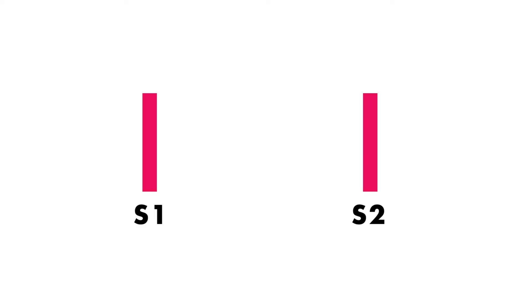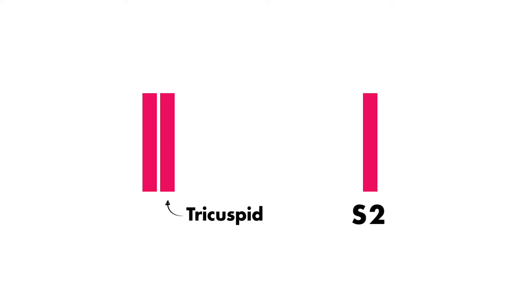Variations to the S1 heart sound can occur due to changes in its intensity, or how loud it sounds. The sound of S1 may also vary depending on how the atrioventricular valves close in relation to one another. For example, if the tricuspid valve closes after the mitral valve, the S1 would be split into different components.